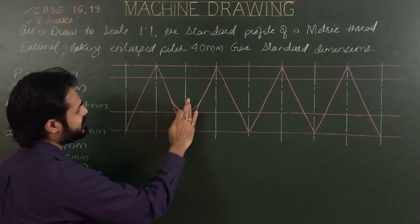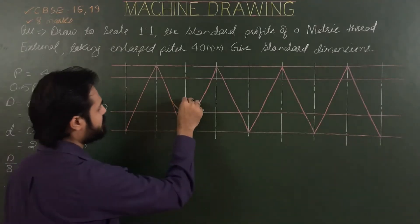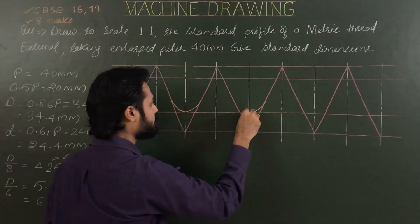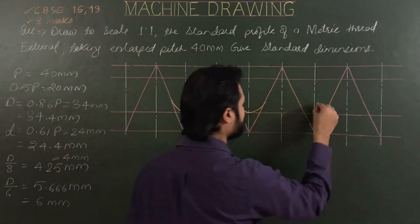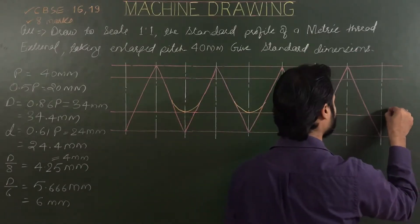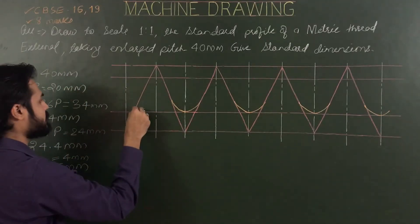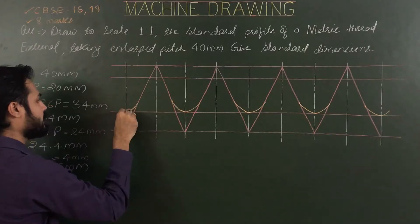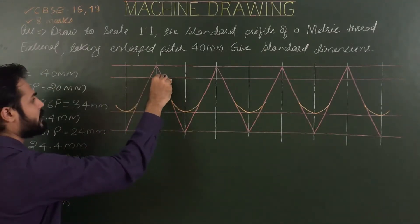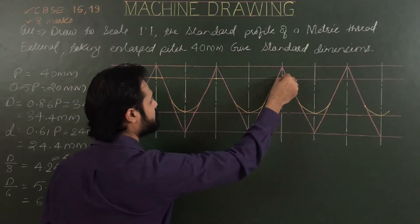Repeat the process for each root — drawing rounded arcs tangent to the flanks at each valley. The crests are flat for metric thread. Continue repeating the process for all roots, and remember crests are flat.